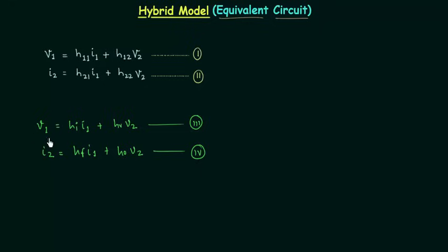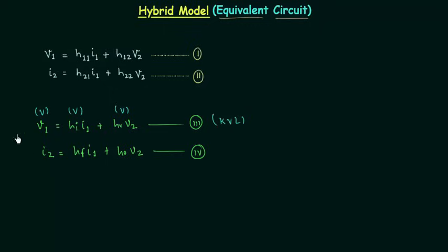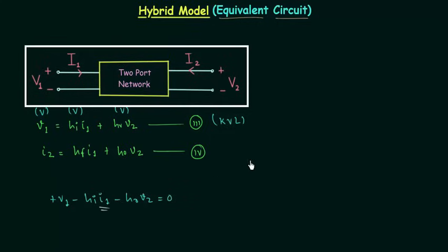In Equation 3, each term has units of voltage. V1 is the input voltage in volts. HI is the input impedance, and multiplying impedance by current gives a voltage drop in volts. HR is dimensionless, and multiplying it by output voltage V2 also gives volts. To obtain the equivalent circuit of Equation 3, we apply KVL: V1 − HI·I1 − HR·V2 = 0, with current I1 flowing clockwise.